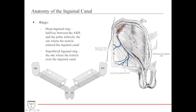There is a deep inguinal ring and a superficial inguinal ring. The deep inguinal ring is located halfway between the ASIS and the pubic tubercle. The superficial inguinal ring is the site where the testicle exits the inguinal canal and enters into the scrotum — coming through the deep ring, traveling inside the canal, and exiting out the superficial ring.